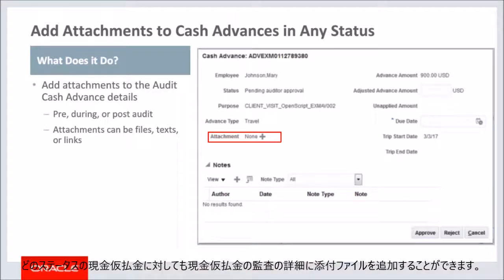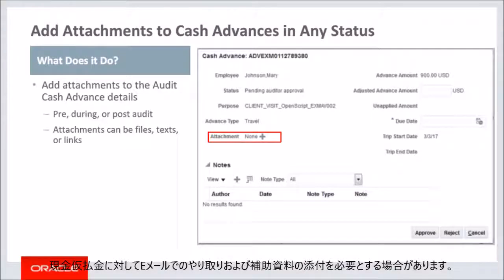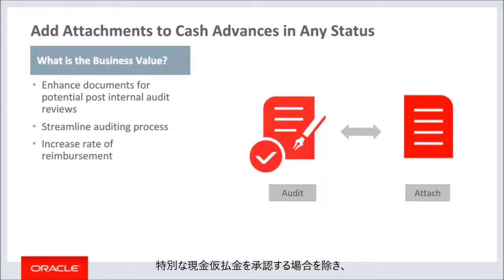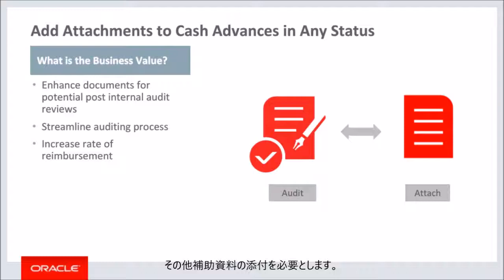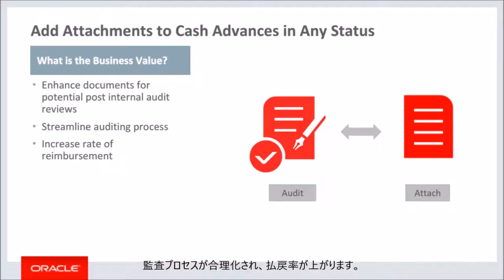Expense auditors are able to add attachments to the audit cash advance details for cash advances in any status. An expense auditor may need to attach email conversations and supporting documents to a cash advance in any stage of audit — pre, during, or post audit. In cases of specific cash advance approval exceptions, auditors are required to attach supporting email approvals or any other documents. Auditors can now easily attach any supporting documents which are required for any post internal audit reviews, allowing the auditing process to be streamlined, thereby increasing the rate of reimbursement.